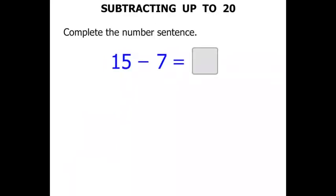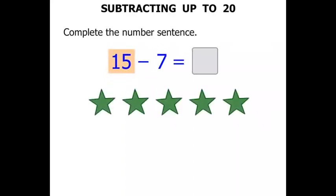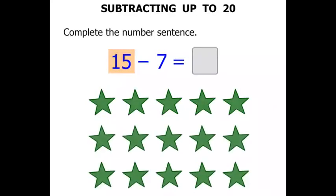What about this one? 15 minus 7. Well let's start by getting 15. We can count up in 5's I think. 5, 10, 15. Okay, 15 there. We are subtracting 7. Let's cross them out.